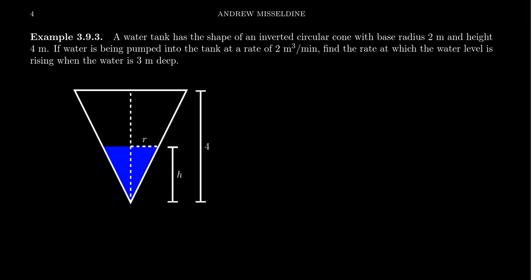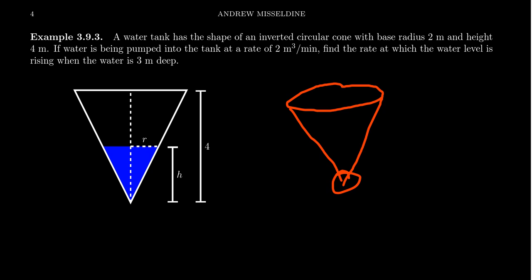Suppose we have a water tank that has the shape of an inverted circular cone — basically a tank that looks like an ice cream cone, with the apex pointing down. The radius of the circle at the base of the cone is 2 meters, and the height of this cone is 4 meters. This gives us the dimensions of the cone, which will be important as we go forward.